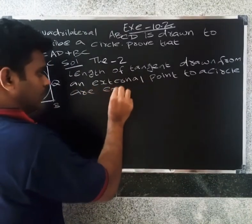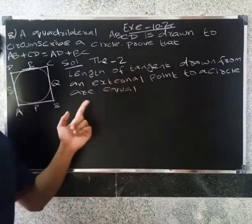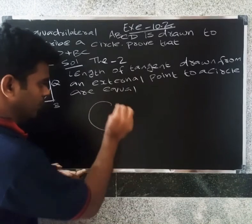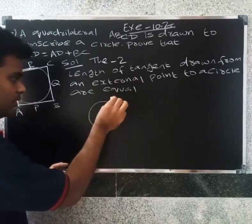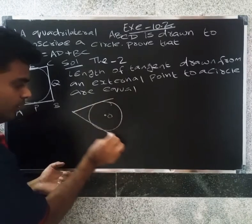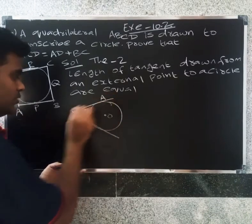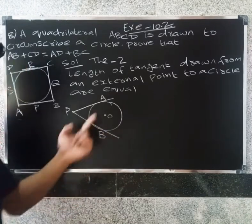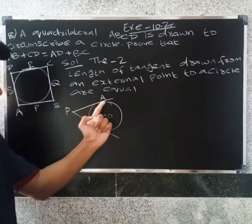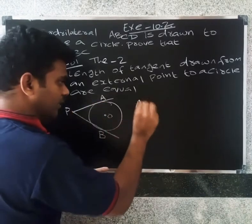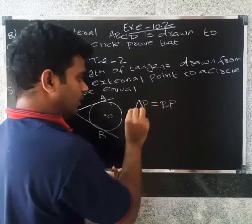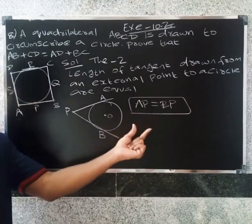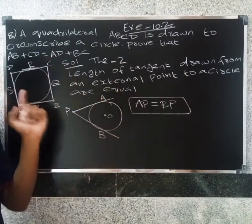This theorem states that the length of tangent drawn from an external point - so if you have an external point, the tangents from that point to the circle are equal in length. We will use this theorem to prove the problem.